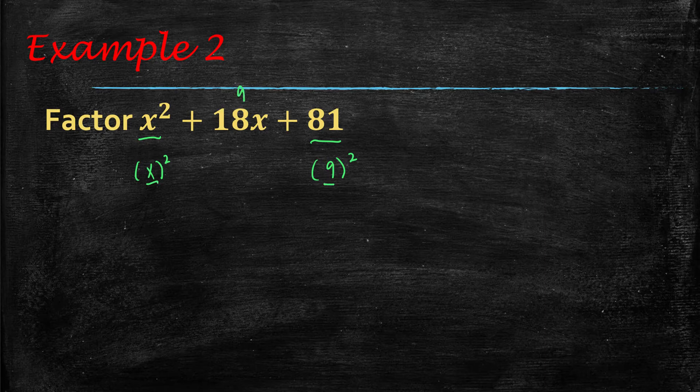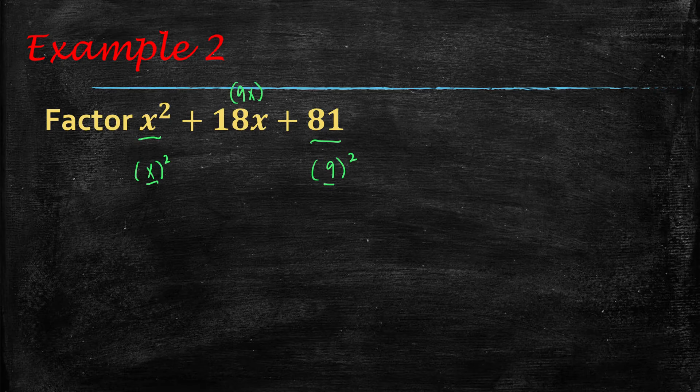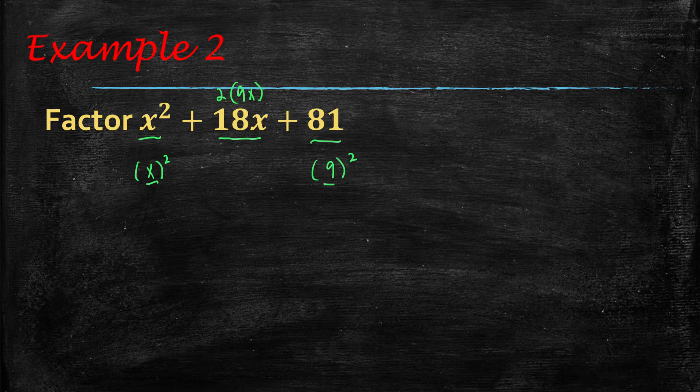which would be 9x, and we'd want to double it. And if it equals that middle term, then it is a perfect square trinomial.